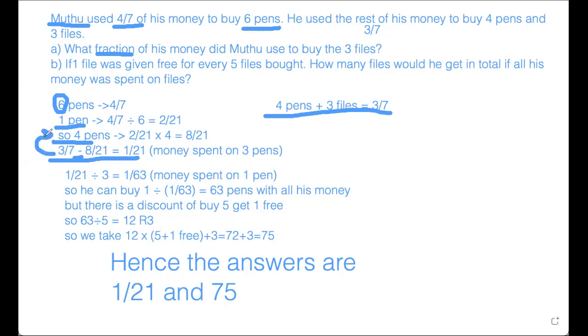So we take 3 over 7 minus the 8 over 21, which was spent on the 4 pens. So now we know the money spent on 3 files. I'll write that right there. 3 files.